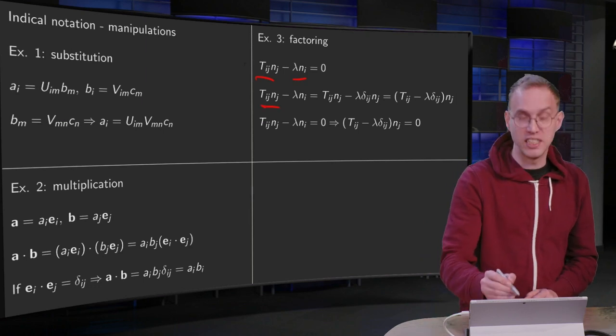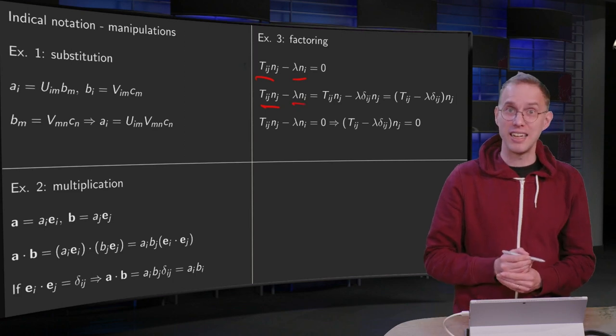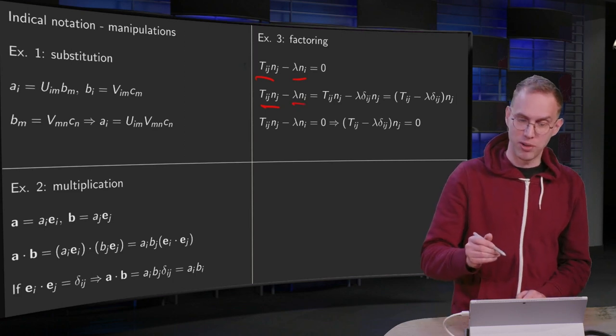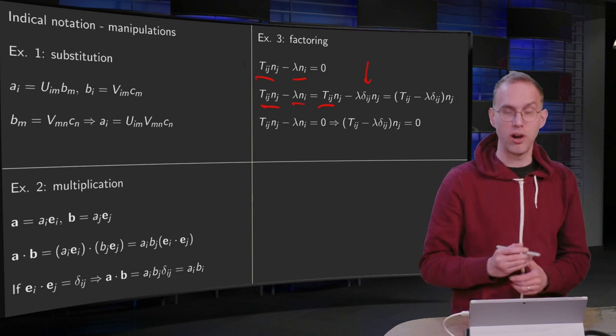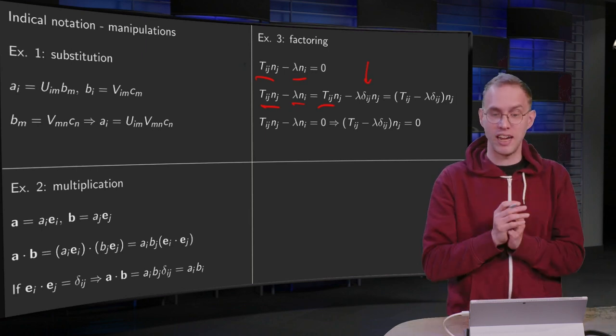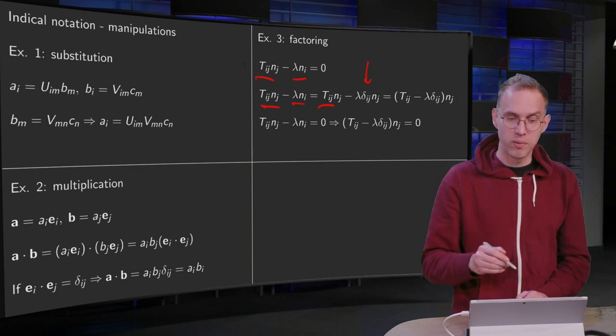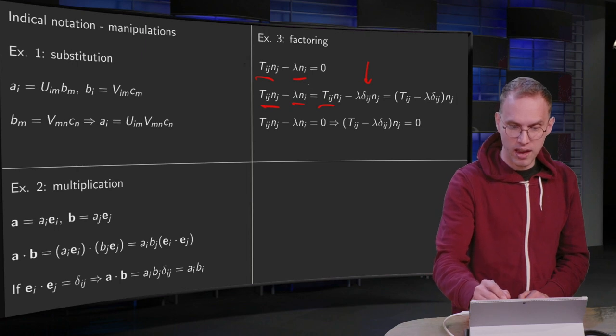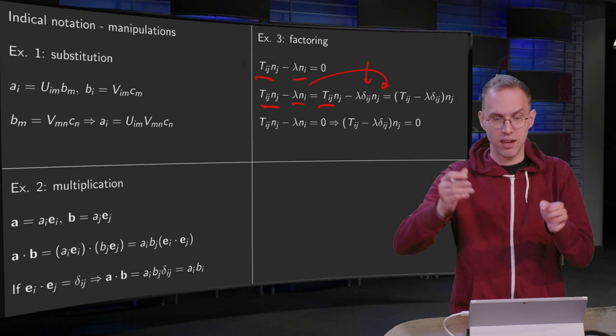So we leave the T_ij n_j and we are going to turn this n_i into an n_j. And how are we going to do this? We just include an additional Kronecker delta, because delta_ij times n_j will give us n_i. So now with this trick we have turned our n_i into an n_j. And once we have done that, we can take it out. So we have (T_ij - lambda delta_ij) times n_j.